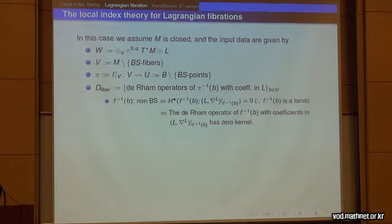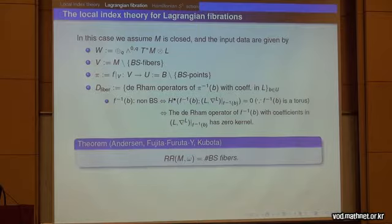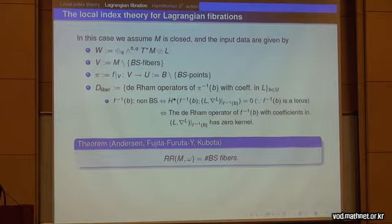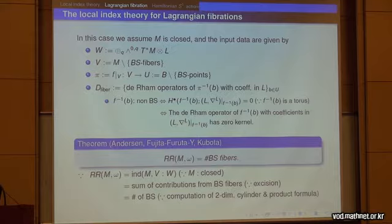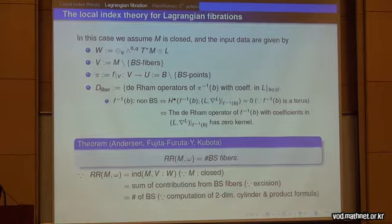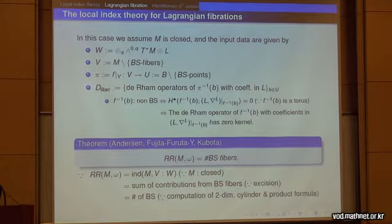Applying the index theory to this case, we obtain the formula: the Riemann-Roch index equals the number of Bohr-Sommerfeld fibers. The proof is straightforward: since M is closed, the Riemann-Roch index equals our local index. By the excision formula, the local index decomposes as a sum of contributions from the Bohr-Sommerfeld fibers. By direct computation of the two-dimensional cylinder case and using the product formula, each contribution equals one. Hence the Riemann-Roch index equals the number of Bohr-Sommerfeld fibers.